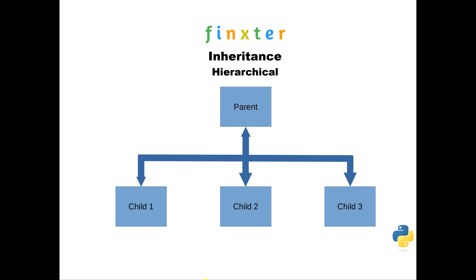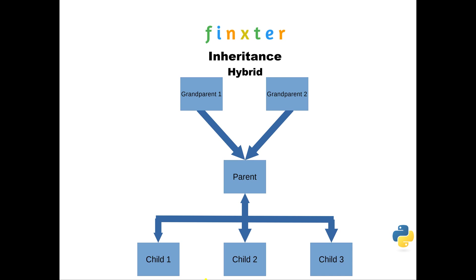Hierarchical inheritance is like an organization chart in a company — there is one parent with multiple children. Hybrid is an amalgam of all the previous types: you can have multiple grandparents feeding into parents, who each feed into multiple children. Hybrid is effectively a combination of those four inheritance types we've just discussed.